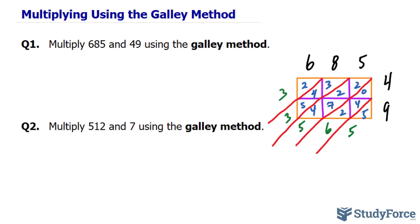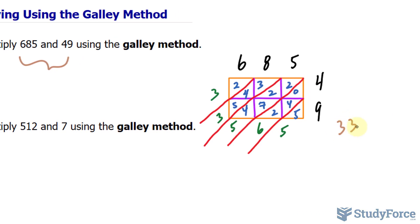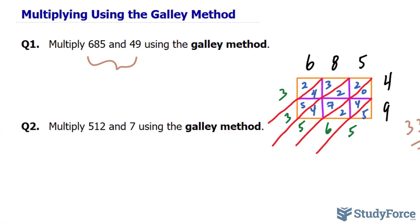The answer, the product, to these two is 33,565. That's a lot better than doing it the traditional way in my opinion. Let's do one more example for good measure.